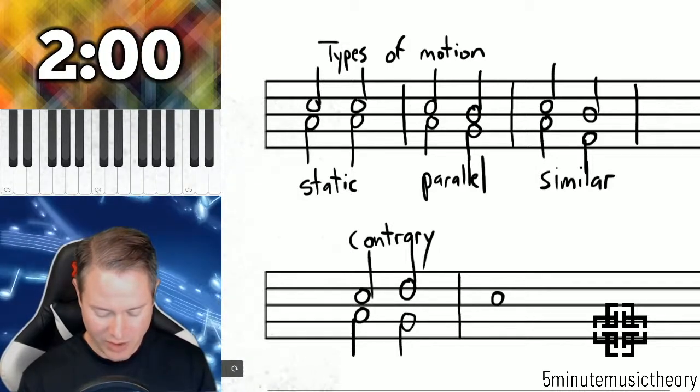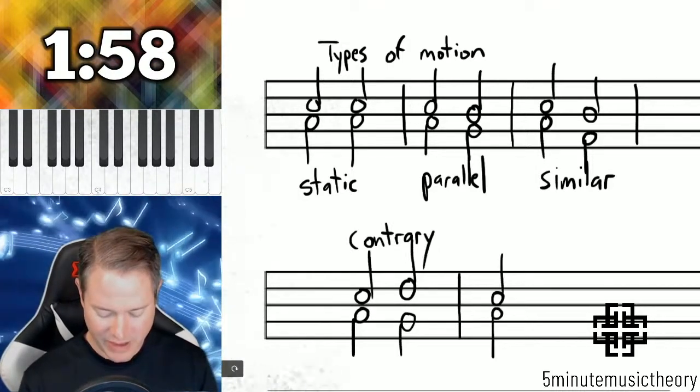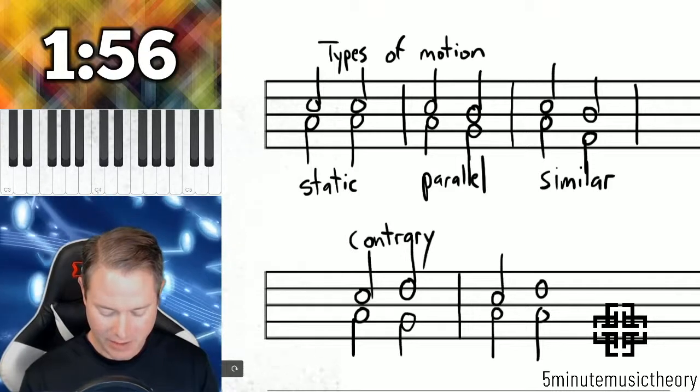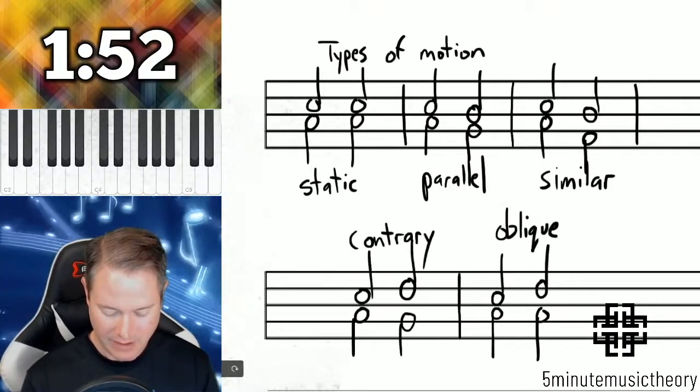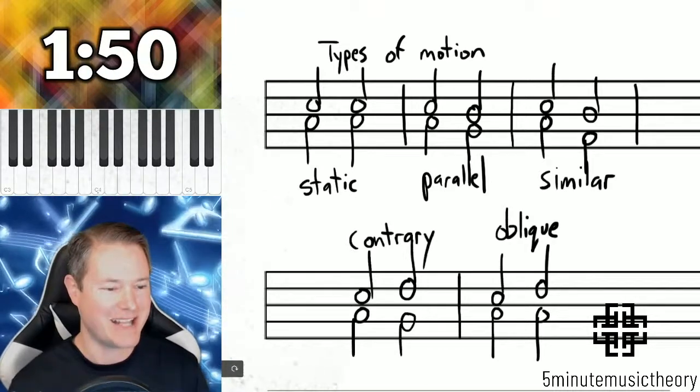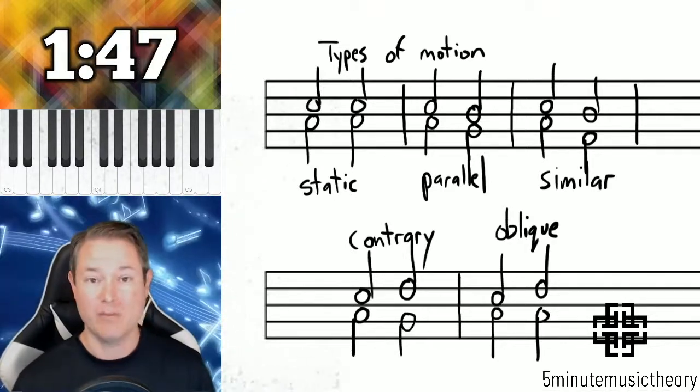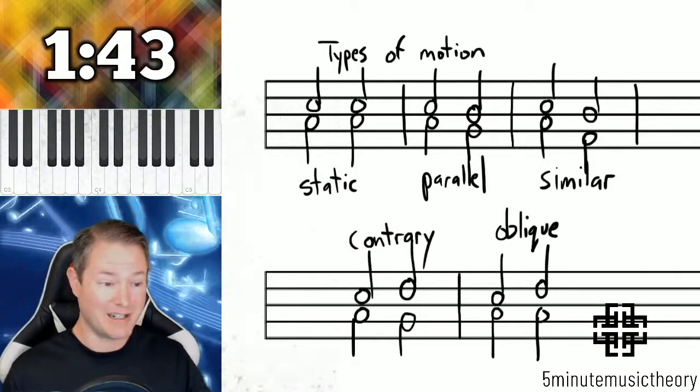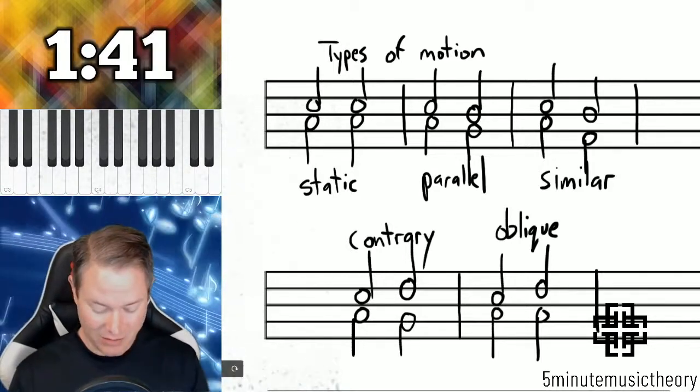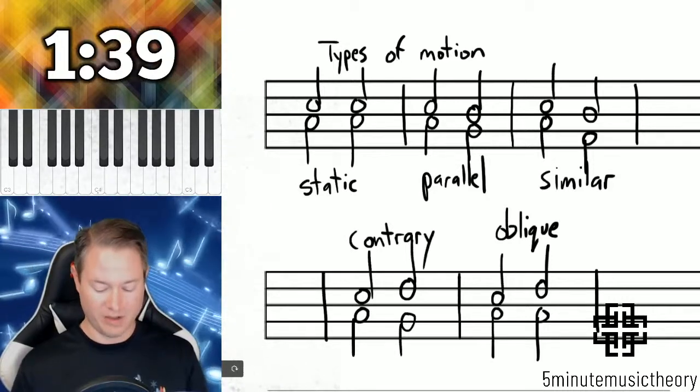And the last type of motion is what's known as oblique motion. With oblique motion, one voice remains the same or in the same place and the other moves, and it can move away or towards the other voice which is remaining static. And this is all five of our types of motion.